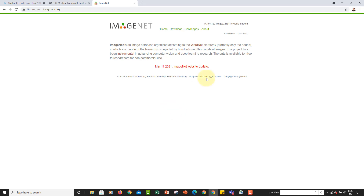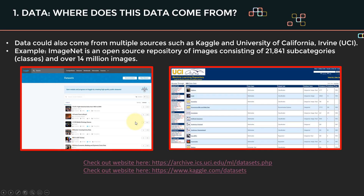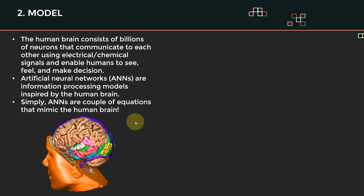The next ingredient to build any AI model is the model itself. The human brain consists of billions of neurons that communicate with each other via electrical and chemical signals, enabling us to see, feel, and make decisions. As I speak right now, neurons in my brain are communicating, enabling me to see the slides and make decisions.